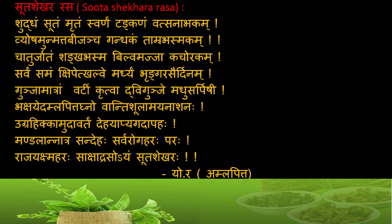Before we go into the phalashruti, most of the indications related to suta shekhar rasa as per this reference are explained in amlapitta, vanthi, shula, ugrahikha, udhavarta, yapyagada, and also specifically in sarvarogahara and rajayakshma. The author compares this formulation as equivalent to the properties of Lord Shiva or mercury — 'sakshat raso ayam suta shekharaha' — praising it as equivalent to mercury or Lord Shiva. This is one such formulation which addresses most of the GIT abnormalities.